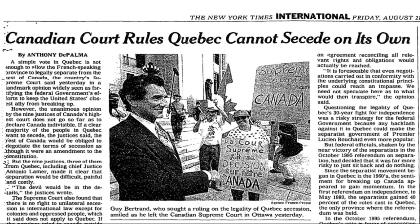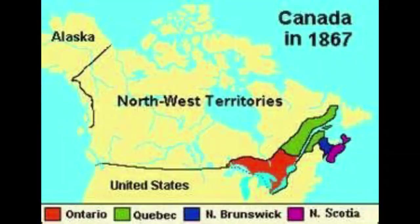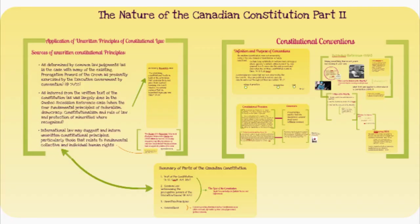We have unwritten principles of constitutional law that must be looked at in addition to the written ones. Analysis, first step: is this justiciable? If it is a legal question, it's justiciable. If it is political, then it is not. Yes, it is a legal question. Second step: addressing the question before the court. Because there was no precedence, the court had to figure out how to interpret the Constitution. There was a gap in the written Constitution to answer the questions. Therefore, the court had to use unwritten principles.